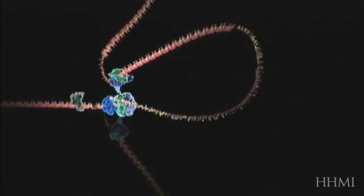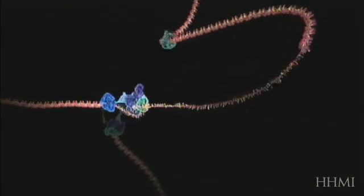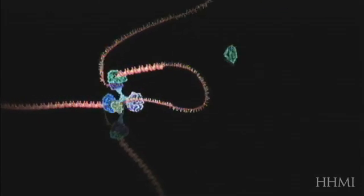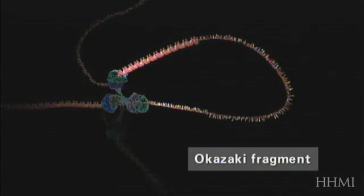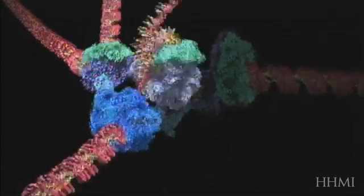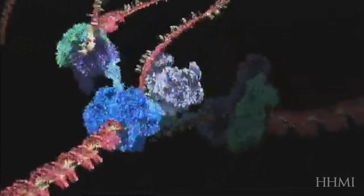As it emerges from the helix, the lagging strand is organized into sections called Okazaki fragments. These are then presented to a second DNA polymerase enzyme in the preferred 5' to 3' orientation.